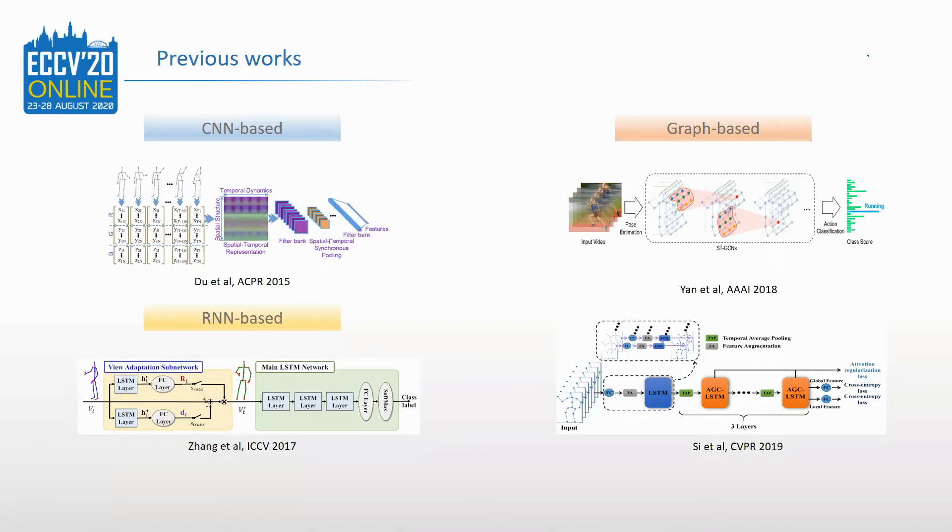For CNN-based methods, spatial temporal features are learned with CNN to recognize actions. To capture temporal information, many methods design recurrent neural networks to capture motion features from sequences. As graph-structured data, there are many graph-based methods to be used for 3D action recognition.